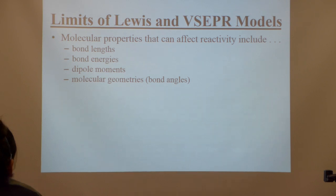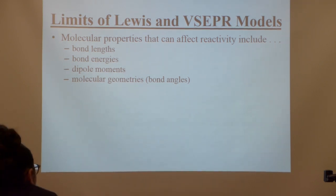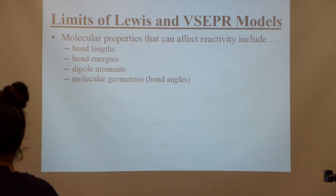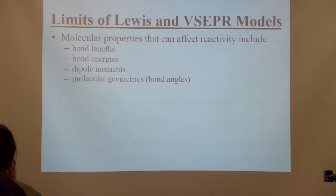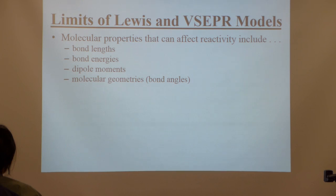So we've done Lewis theory, we've done VSEPR theory. We have these Lewis structures, we can determine the shapes of them, we can determine the polarity of them. But what is the bonding model that explains those shapes? That's what Valence Bond theory is all about.